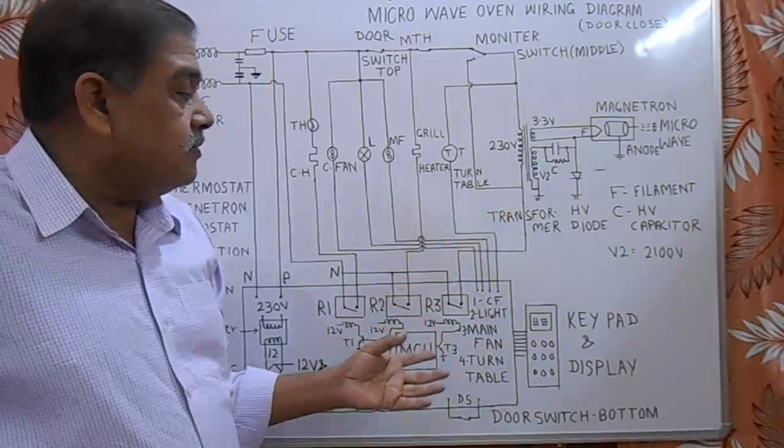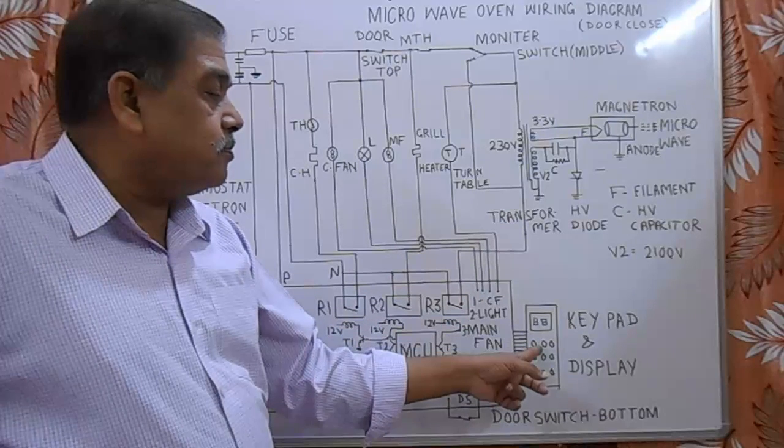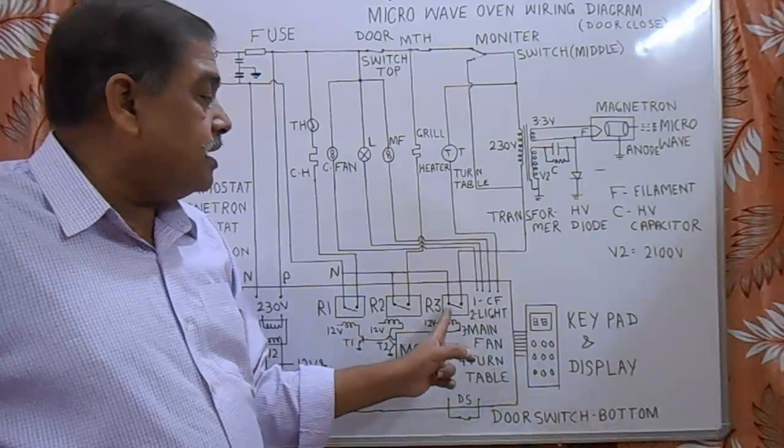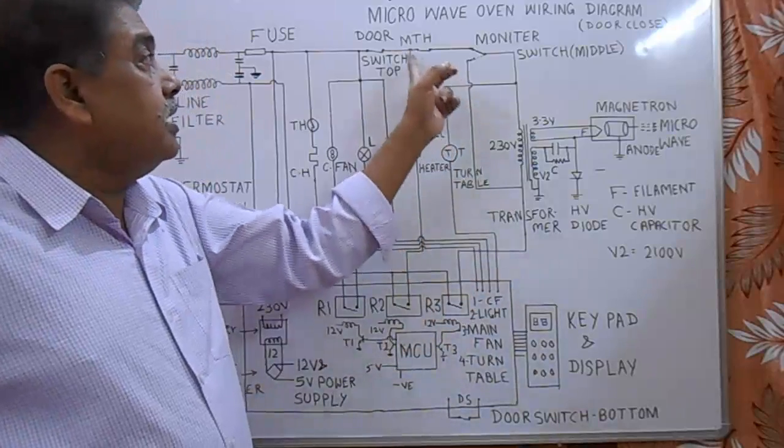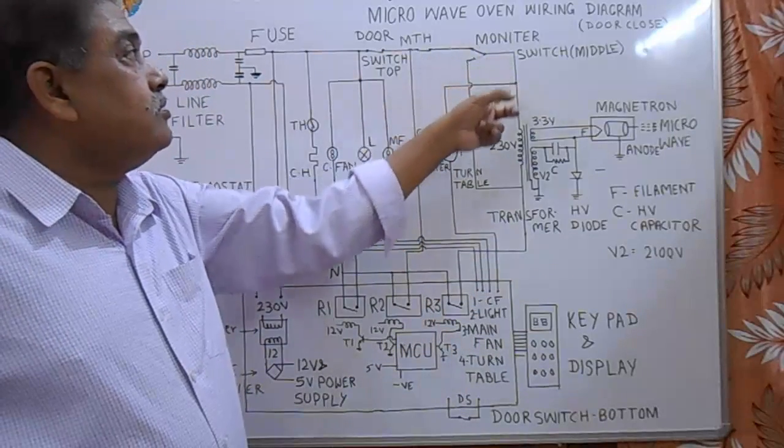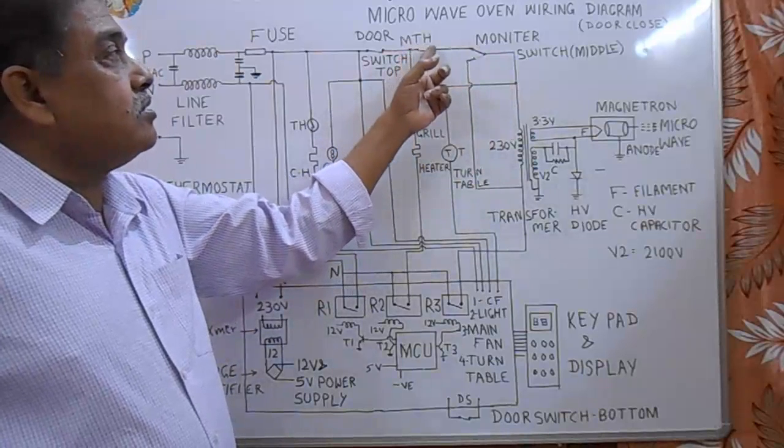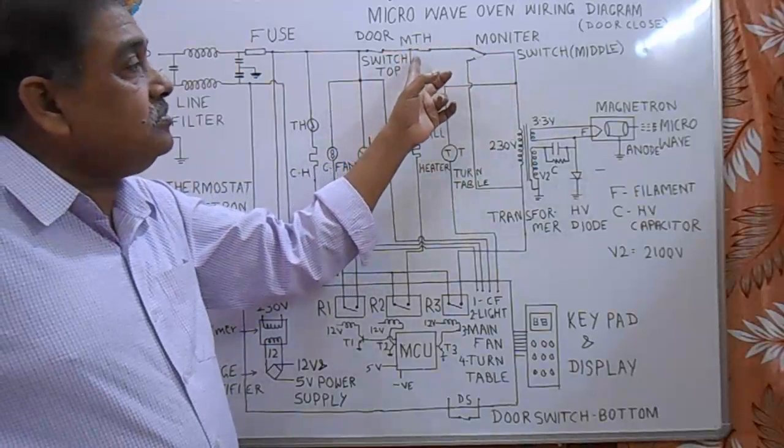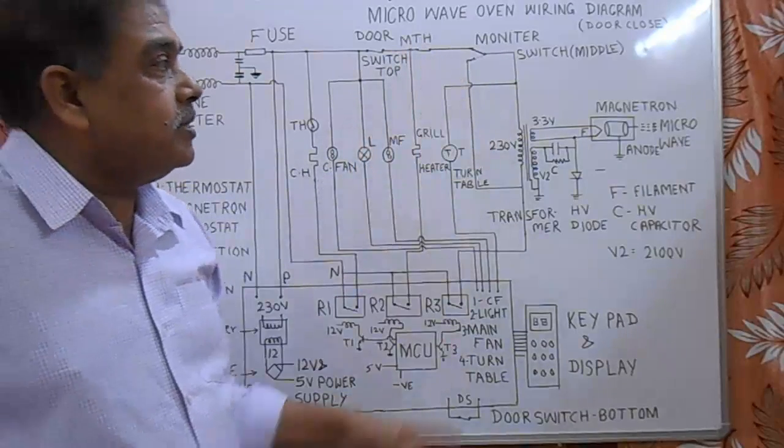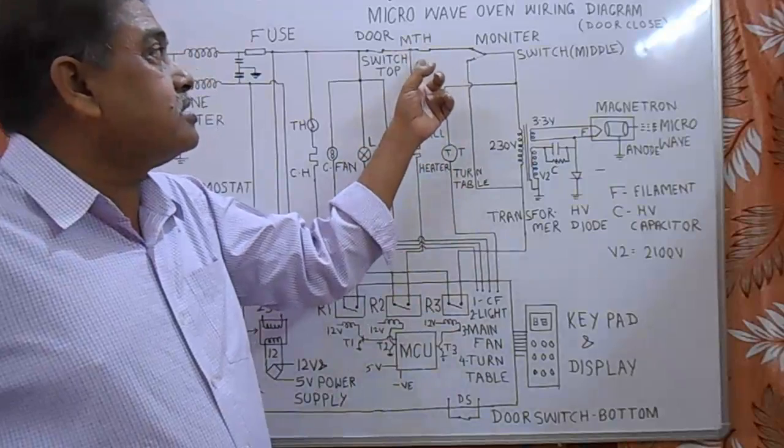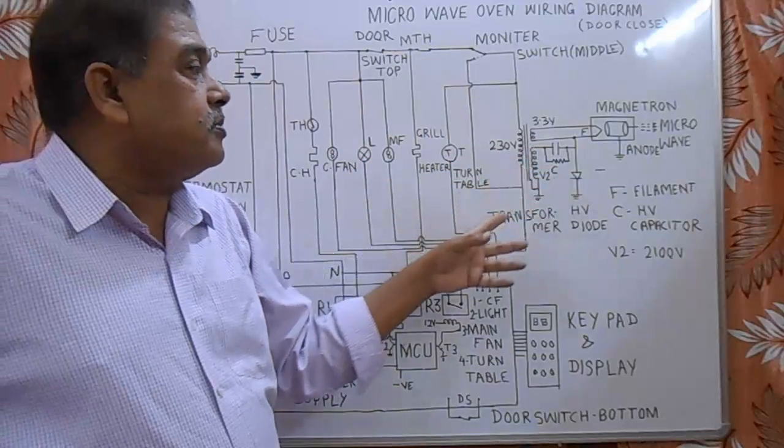When we want to switch on microwave, when we switch on from this control pad, this relay R3 picks up and neutral goes to the microwave. From this side, phase goes to the microwave. It is magnetron thermostat. Whenever the temperature of magnetron goes high, it stops the supply to the transformer and this way magnetron gets cooled down.